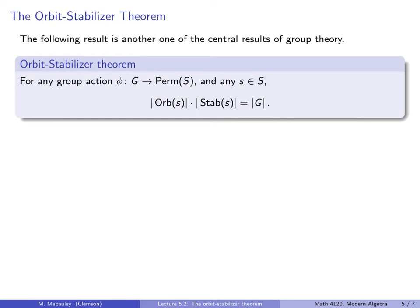At last, we come to the Orbit-Stabilizer Theorem, the main topic of this lecture — one of the central results of basic group theory. It says that for any group action phi from G to the permutations of S and for any fixed element s in our set, the size of the orbit containing s times the size of the stabilizer of s equals the size of the group G. Note the orbit is a subset of S and the stabilizer is a subset of G.